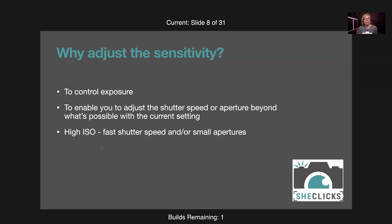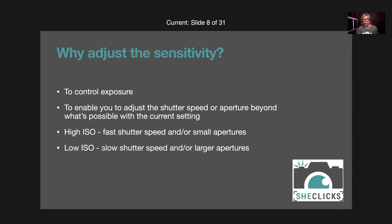High ISO settings allow you to use fast shutter speeds and/or small apertures. Low ISO enables you to use slow shutter speeds and/or large apertures. For a landscape on a tripod, you could use a slow shutter speed and small aperture with a low ISO. Whereas if you're shooting sport in slightly dull conditions, you might need a higher ISO to achieve the fast shutter speeds you need.